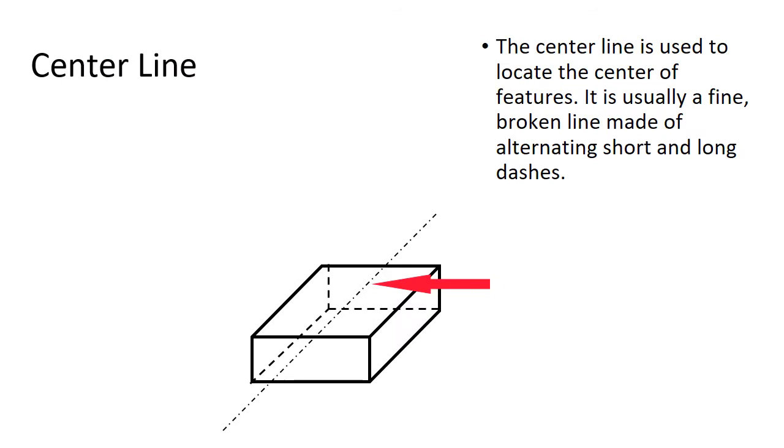Here's a center line. We use center lines to locate the center of features. You'll mostly see this on holes. If we need to drill a hole in something, holes don't have edges. Circles don't have edges. So we can't measure off of an edge of a block six inches to an edge of a circle and expect to have any kind of accuracy because there's no edge to the circle. But circles do have a center.